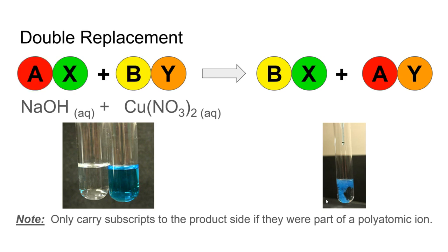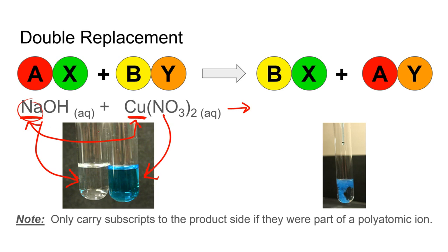Let's look at a specific example of sodium hydroxide reacting with copper nitrate and predict the products of this double replacement reaction. We need to imagine the two metal ions — sodium and copper — switching places. Sodium comes over and takes copper's place, and sodium's new partner will be the nitrate ion.